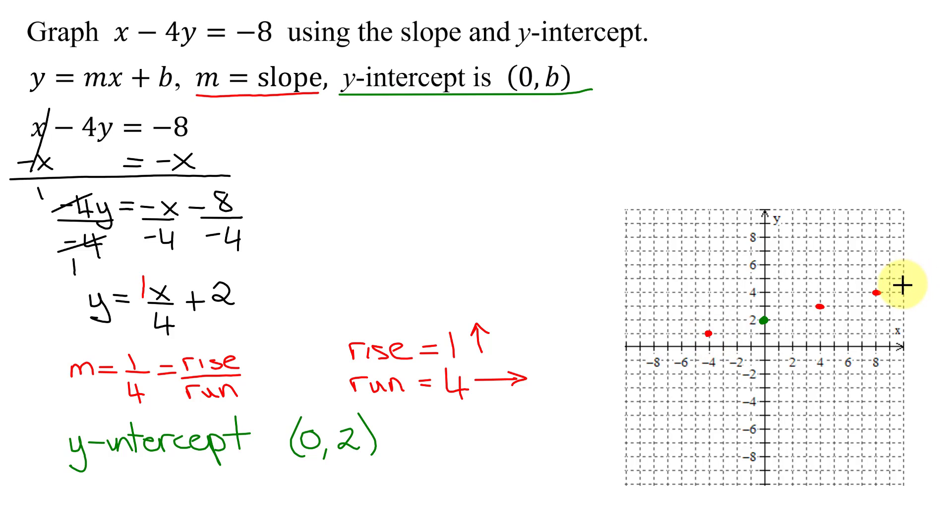So now I'm going to try and graph a line going through those points, which looks roughly like that. Don't forget, you always put arrows on both ends. So that is how you graph the line x minus 4y equals negative 8 using the slope and y-intercept.